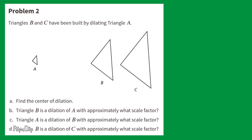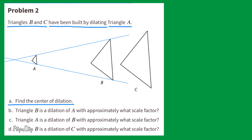Problem number 2. Triangles B and C have been built by dilating triangle A. Part A: find the center of dilation. One method would be to draw straight lines from the corresponding angles, extending them past the points. Where these two lines intersect will be the center of dilation.